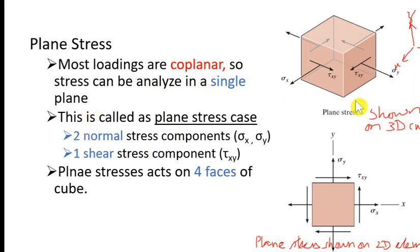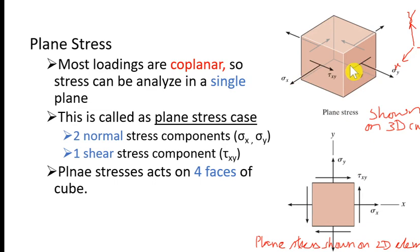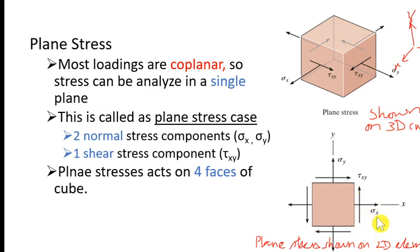This is called the plane stress case. Looking at the diagram, the cube is shown but only four faces have stresses. If we pass a plane at a point, all stresses can be shown on that plane — that is why it is called a plane stress case. To convert this 3D cube into a 2D element: the x-axis is shown here, the y-axis here, and the stresses are sigma_x, sigma_y, and tau_xy, where tau_xy is the shear stress component.